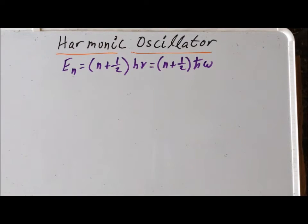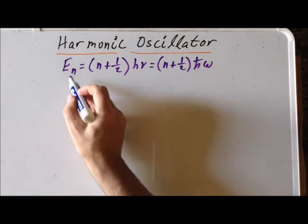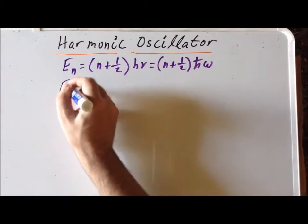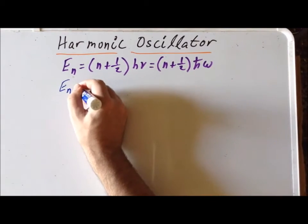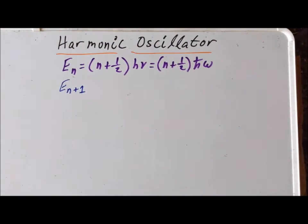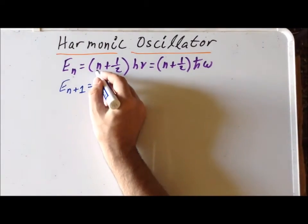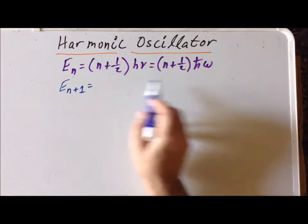So how can we figure out the distance between any two energy levels? What we want to do first is to write an expression for the nth plus one energy level. So this is the next higher energy level above e sub n.